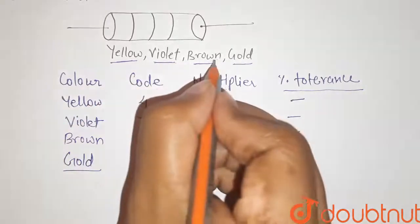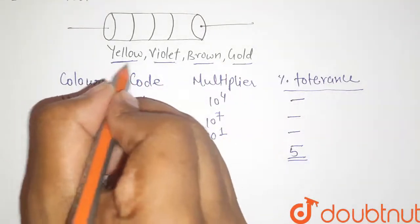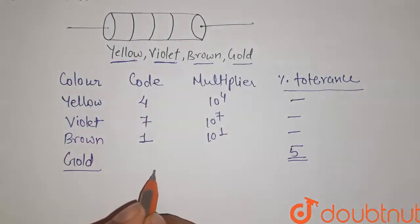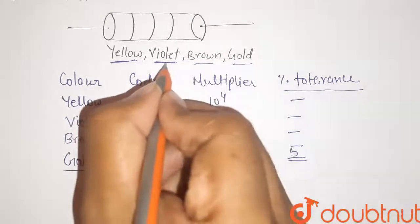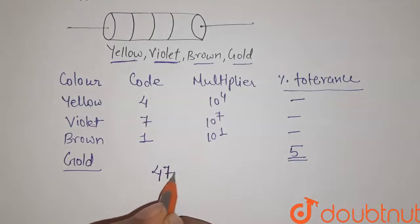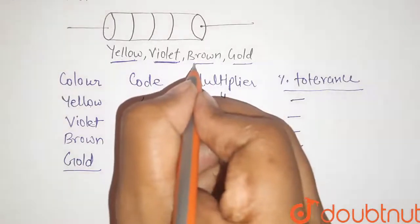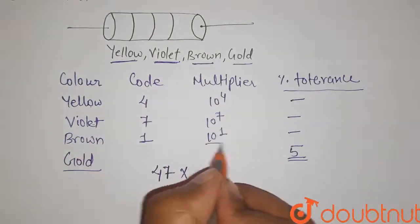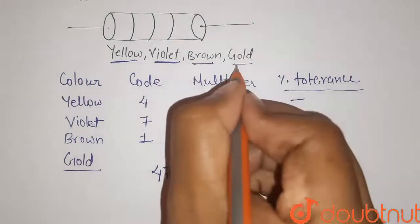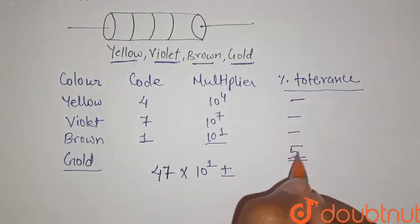To find the resistance of this carbon resistor, we first write the code for the first two colors in order. Yellow has code 4, so we write 4. The second color is violet with value 7, giving us 47. We then multiply by the multiplier: the third color is brown, so the multiplier is 10 to the power 1. The fourth color indicates percentage tolerance.